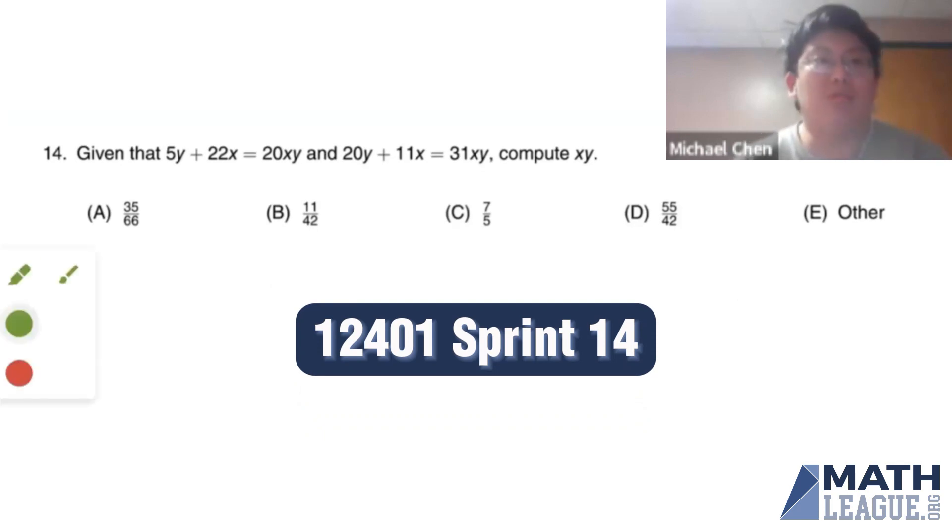Given that 5y plus 22x is 20xy and 20y plus 11x is 31xy, compute xy.